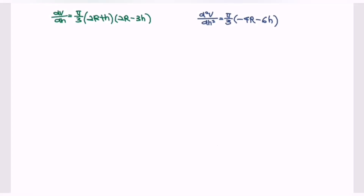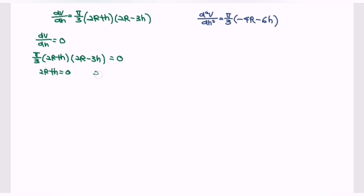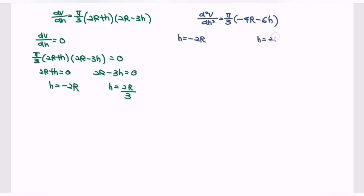Now we find the critical values by setting dV/dH = 0. So (π/3)(2R + h)(2R − 3h) = 0. Solving each factor: 2R + h = 0 gives h = −2R, and 2R − 3h = 0 gives h = 2R/3. We now have two critical values: h = −2R and h = 2R/3.